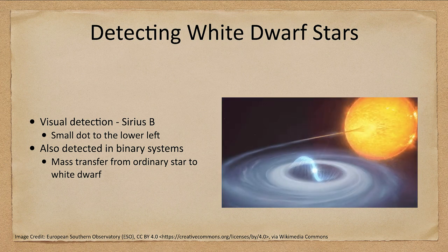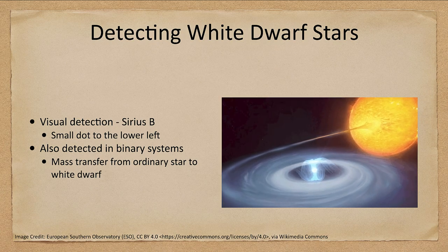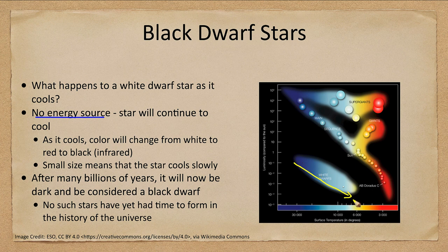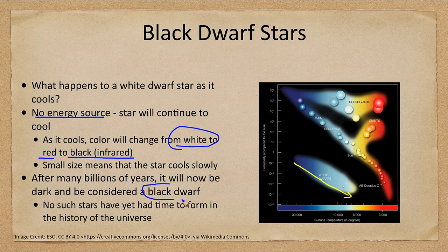What happens to a white dwarf over time? A white dwarf has no energy source, so it starts out extremely hot and all it can do is continue to cool. On the HR diagram, it starts up here and works its way down the white dwarf sequence, parallel to the main sequence, getting colder and colder. As it cools, its color changes — going from white when very hot, to red, to eventually black, meaning it gives off mostly infrared light.